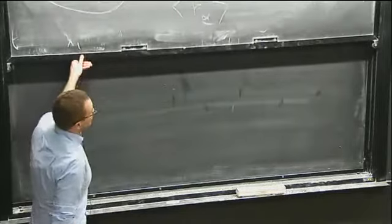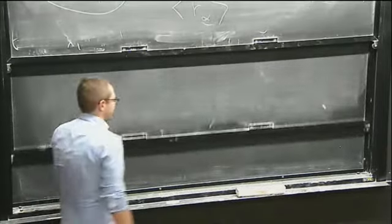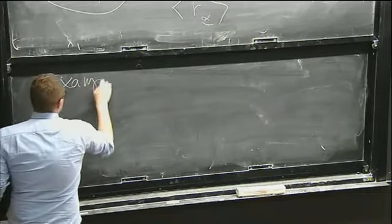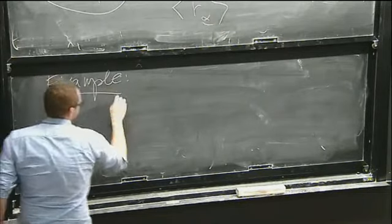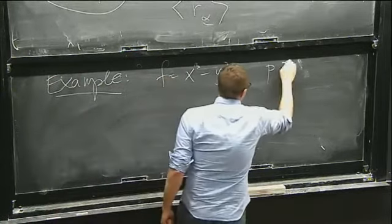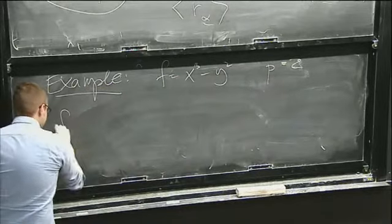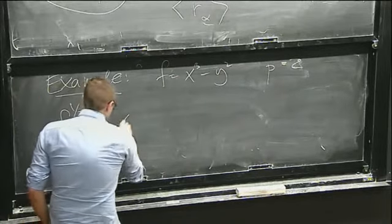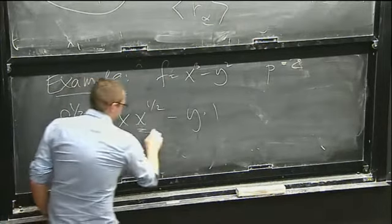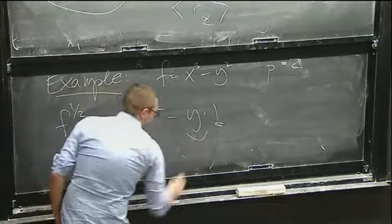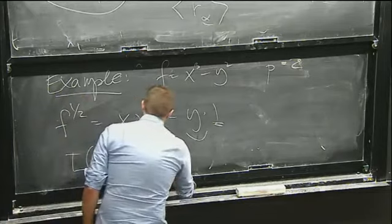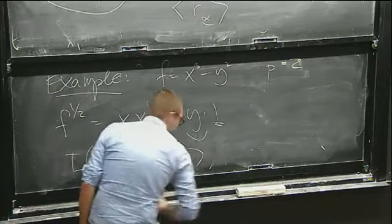Maybe this is best done by example. Where we started off before — in the first example, f^{1/2} was x · x^{1/2} − y · 1, right? So x^{1/2} and 1 are the basis vectors; x and −y are my components. And so τ(f^{1/2}) is the ideal generated by these components.